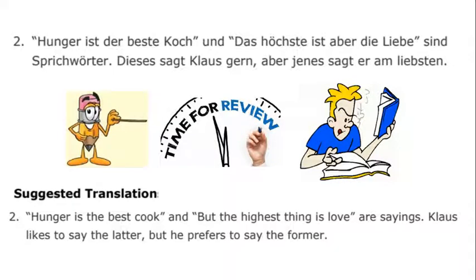The suggested translation is: Hunger is the best cook, and the highest thing is love — both are sayings. Klaus likes to say the latter, but he prefers to say the former. Do you remember how we talked about the former and the latter in German? Here we have dieses and jenes, which clarifies which one we're talking about — the first mentioned in the list, or the second. This is the way to distinguish it in German.